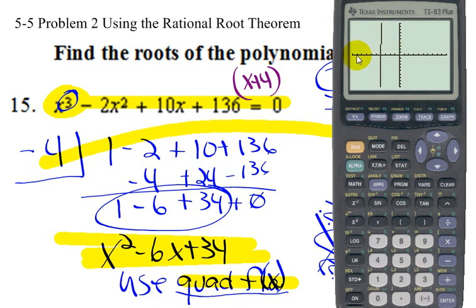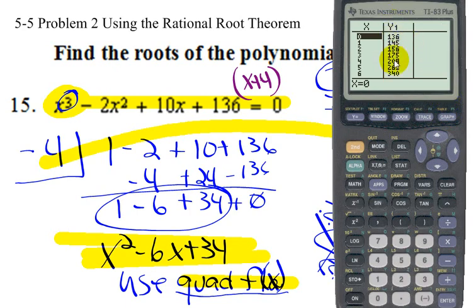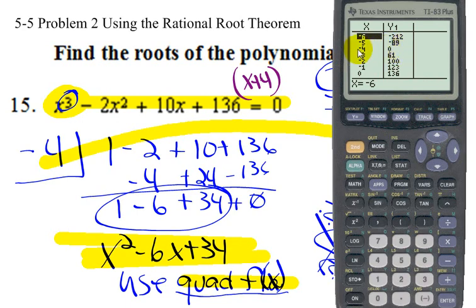Zooming back, it looks like the root is at about negative four, but we can't prove that until we look at the data table. Go to Second Function and hit Table. Look in the Y column for where Y = 0. Scrolling through — there it is, Y = 0 when X = −4. So that confirms our first zero is x = −4, which gives us a springboard to solve the problem and find the others.